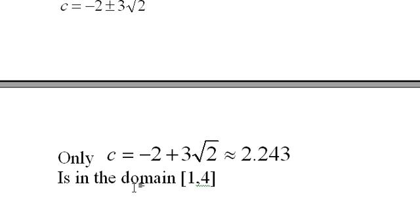This is the only one in the domain from 1 to 4. The other one's a negative number. This is the point on the curve where the x value is between 1 and 4 such that the curve has the same slope as the secant line connecting the points at x=1 and x=4.